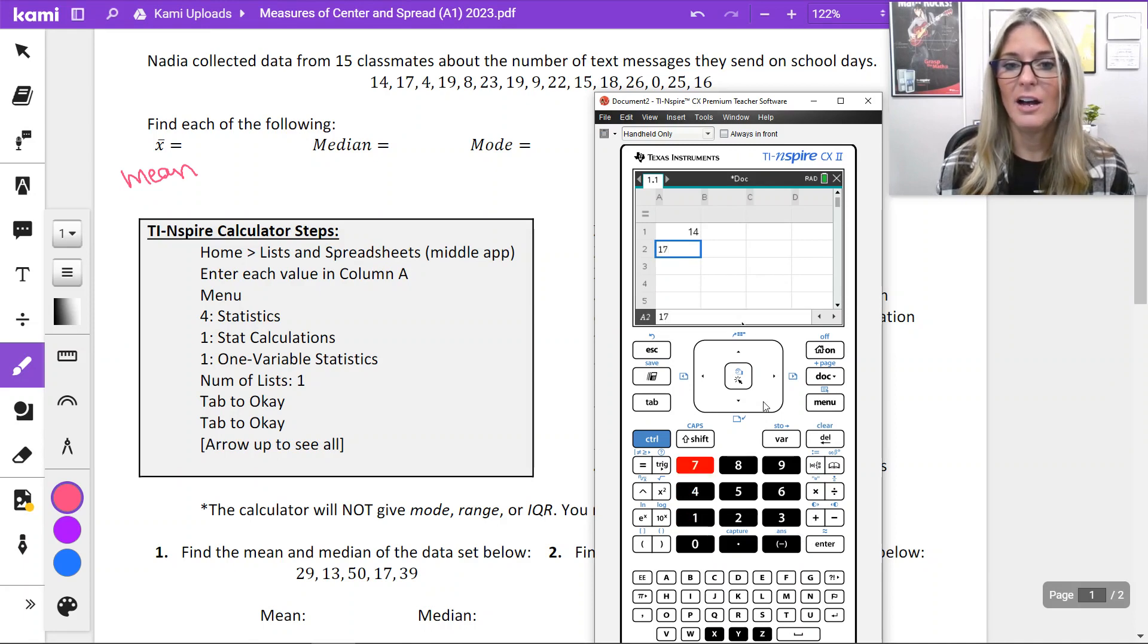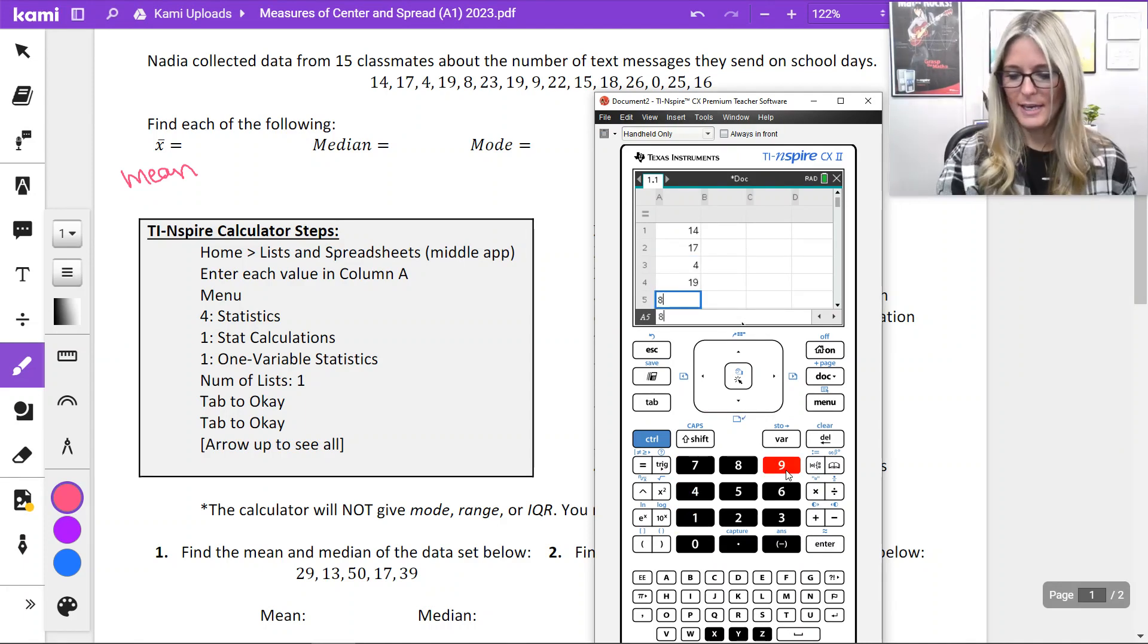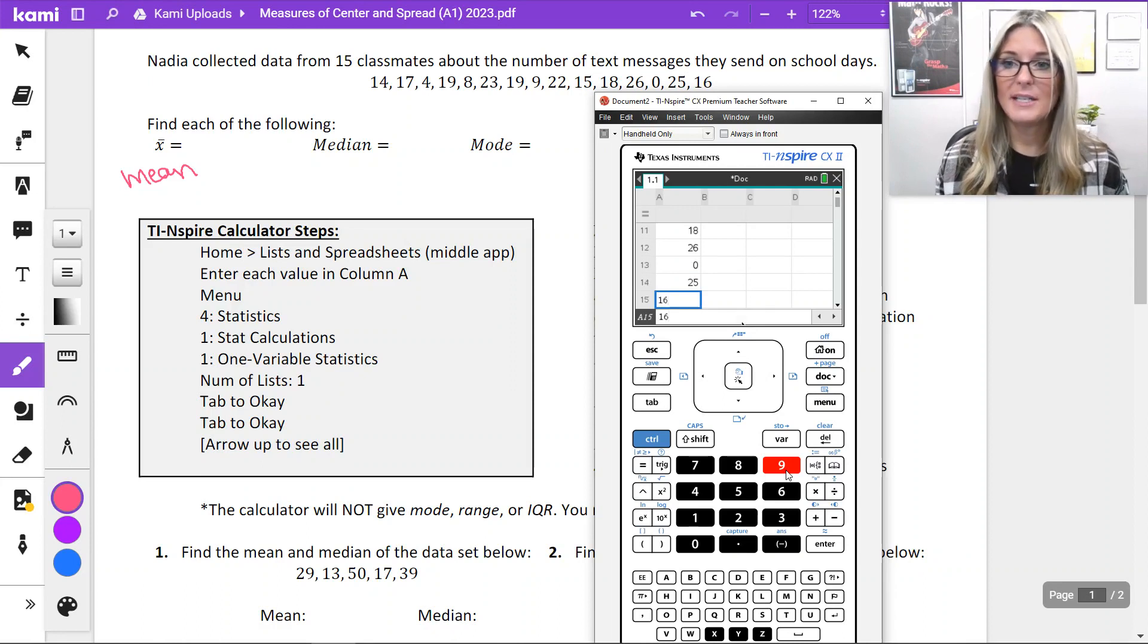17. I could use the arrow down, and it does the same thing. 4, 19, 8, 23, 19, 9, 22, 15, 18, 26, 0, 25, and 16. Now, in the problem, it said Nadia had collected 15 students, 15 classmates data. And so looking at my columns, I am on the 15th row. Go ahead and arrow down out of that.